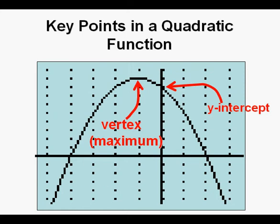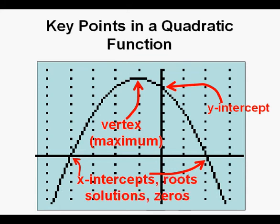Some quadratic functions have two other key points: x-intercepts, shown along the x-axis. These x-intercepts can also be called roots, solutions, or zeros. The word solution comes into play if this quadratic function was created from a quadratic equation — then these x-intercepts would represent solutions to that quadratic equation.